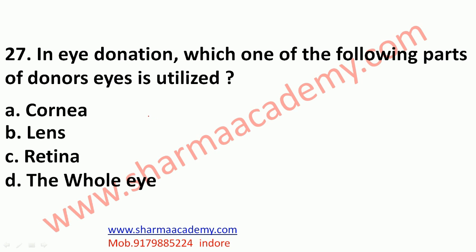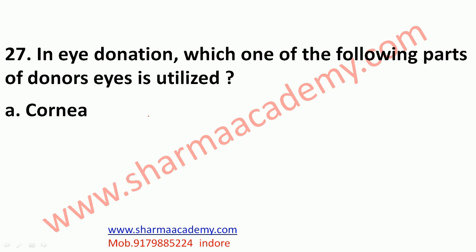The next question: in eye donation, which one of the following parts of the donor's eye is utilized — cornea, lens, retina, or whole eye? The correct option is cornea. The cornea is a clear transparent layer in front of the black portion of the eye. This part of the eye is used in donation. It is also the main focusing surface, which converges light rays as they enter the eye to focus on the retina.